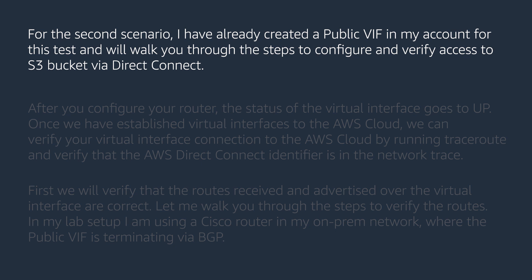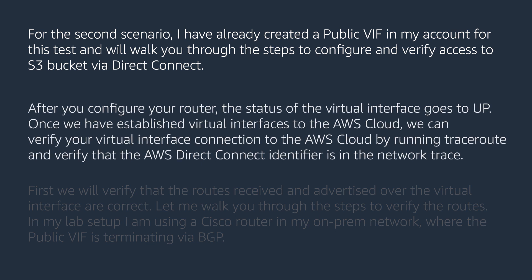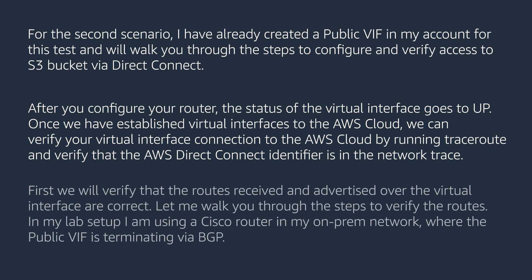For the second scenario, I have already created a public VIF in my account for this test and will walk you through the steps to configure and verify access to the S3 bucket via Direct Connect. After you configure your router, the status of your virtual interface goes to up. Once we have established the virtual interface to the AWS cloud, we can verify your virtual interface connections by running trace route and verifying that the AWS Direct Connect identifier is in the network trace. We will verify that the routes received and advertised over the virtual interface are correct. In my lab setup, I am using a Cisco router in my on-premises network where the public VIF is terminating via BGP.